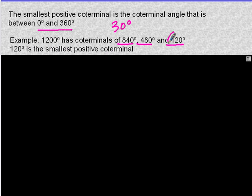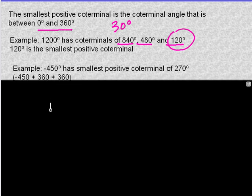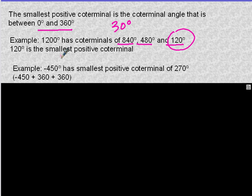For negative 450: to get a positive coterminal, add 360 to get negative 90, then add 360 again to get 270, which is the angle between 0 and 360 — that's the smallest positive coterminal.